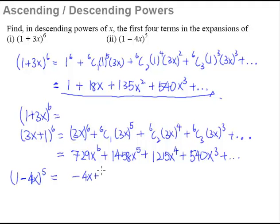So (-4x+1)^5. So 1 will be the one that is increasing in power, well, the -4x will be the one that is in decreasing power.